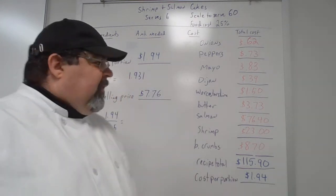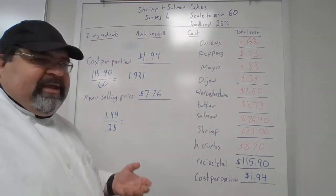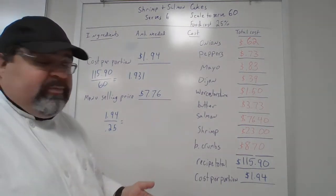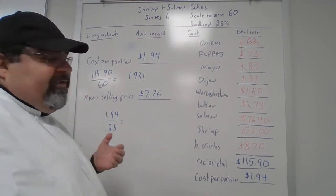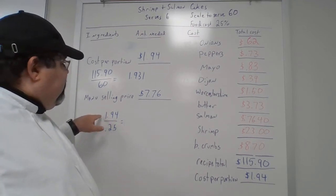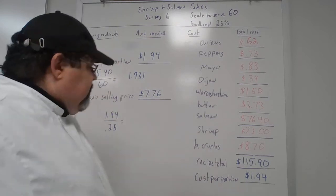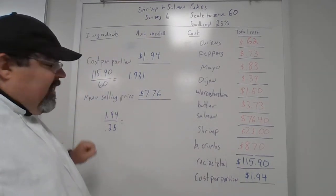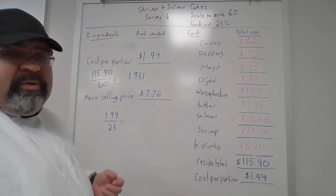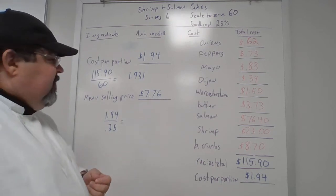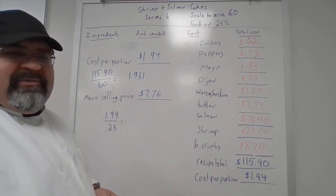$1.94 is our cost per portion — simply the food cost, not the preparation, utilities, plates, breakage, silverware, drinks, or anything else. Just the food cost for this shrimp and salmon cake. For the menu selling price, remember the 25% food cost? Take $1.94 divided by 0.25 to get $7.76. In the real world we'd round that up to $7.95 or $7.99, but $7.76 is the calculated price for a single shrimp and salmon cake on a menu.